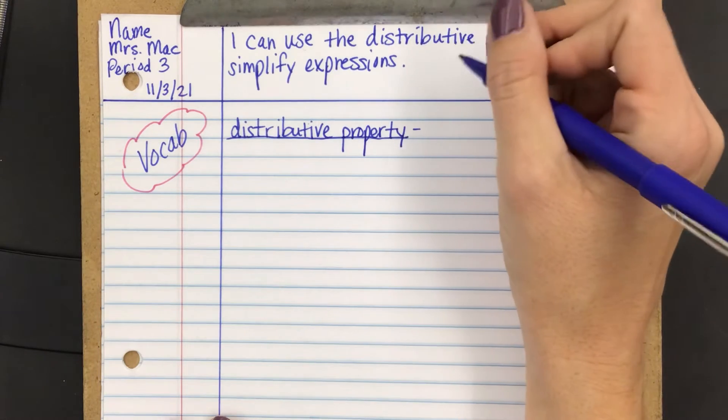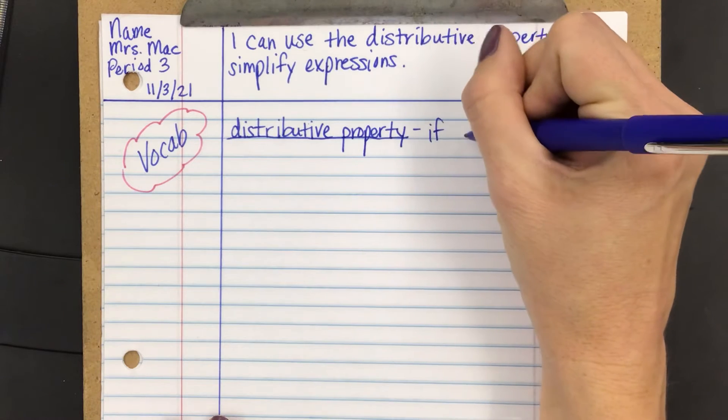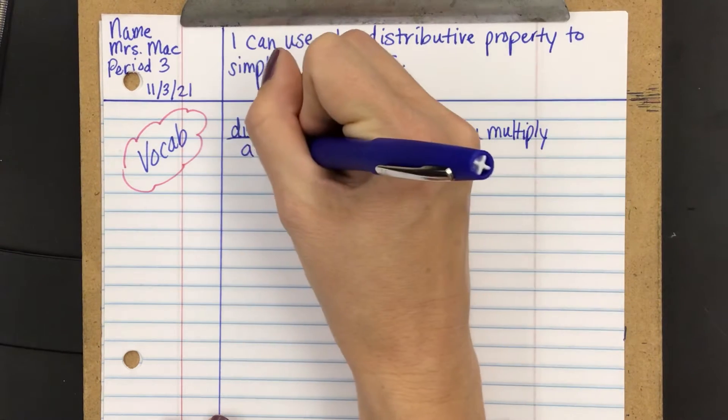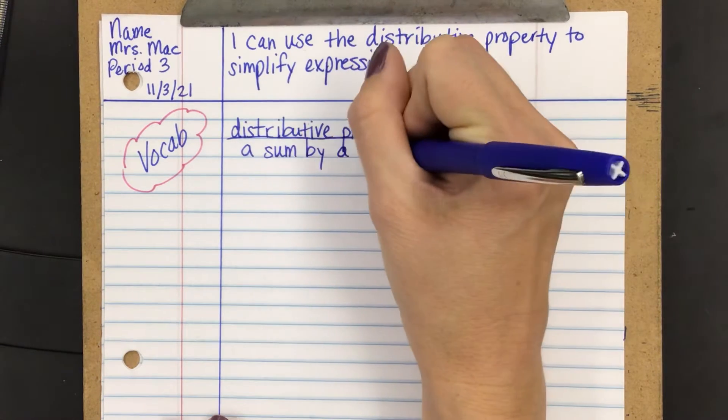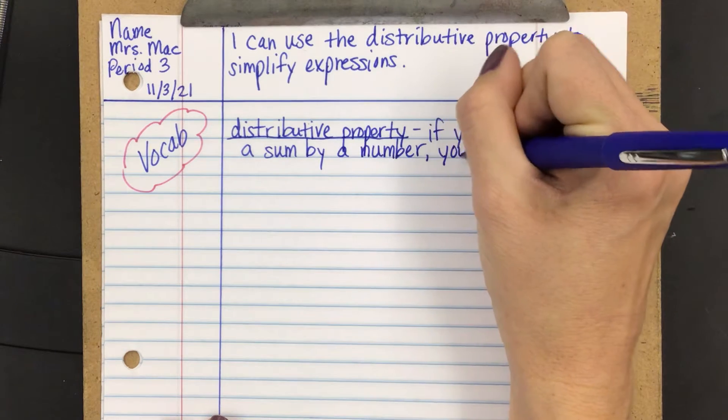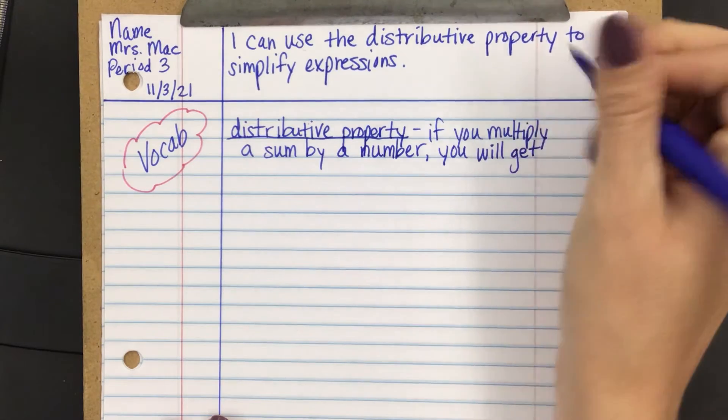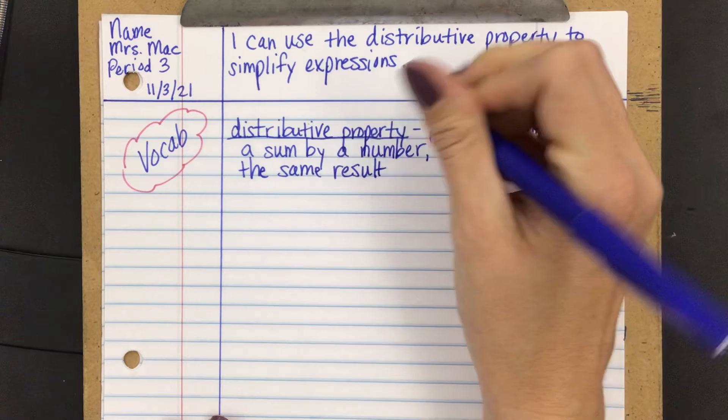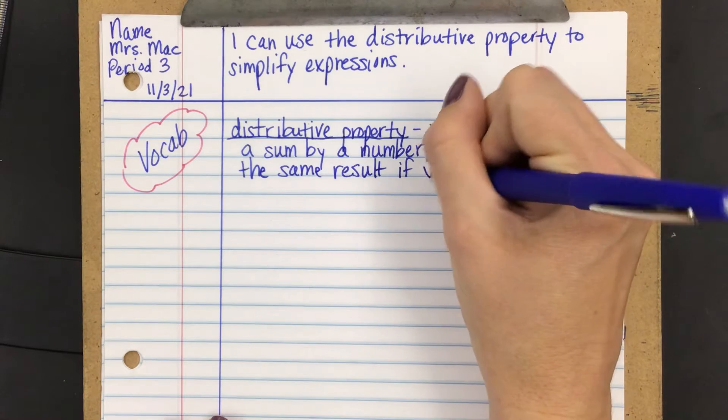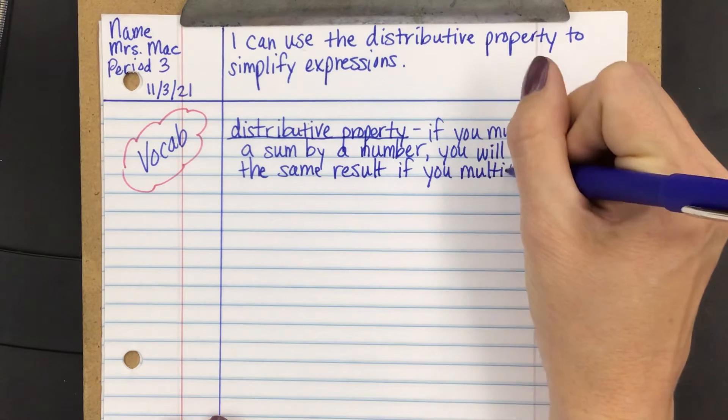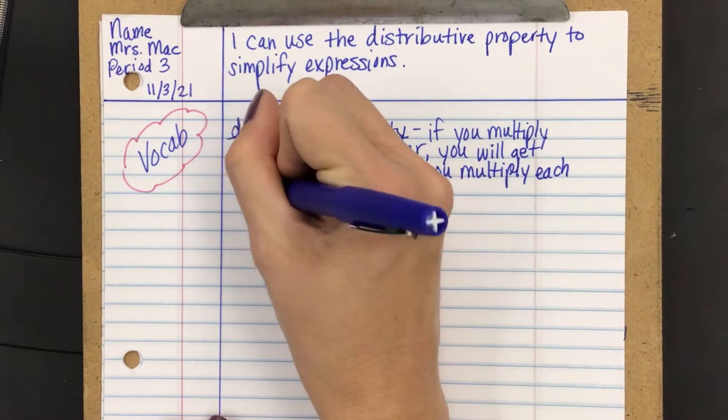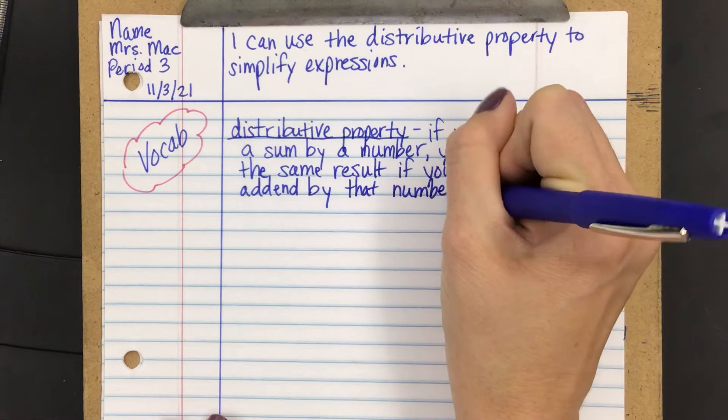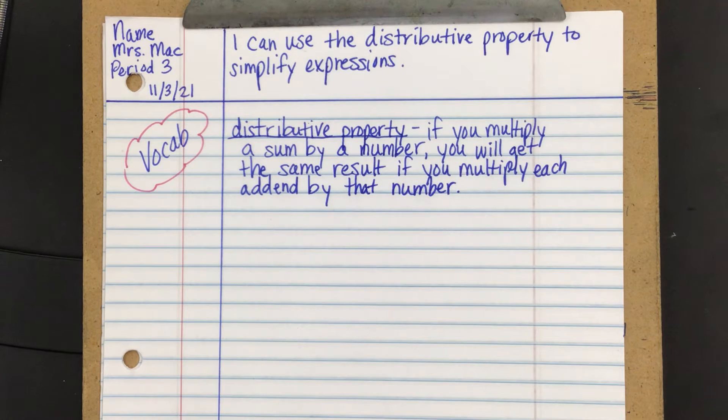All right, the distributive property. So the distributive property states that if you multiply a sum by a number, you will get the same result if you multiply each addend by that number. Now, I know that's a lot, so I'm going to demonstrate it in an example, but I'm going to give you a second to get caught up and get that definition down.